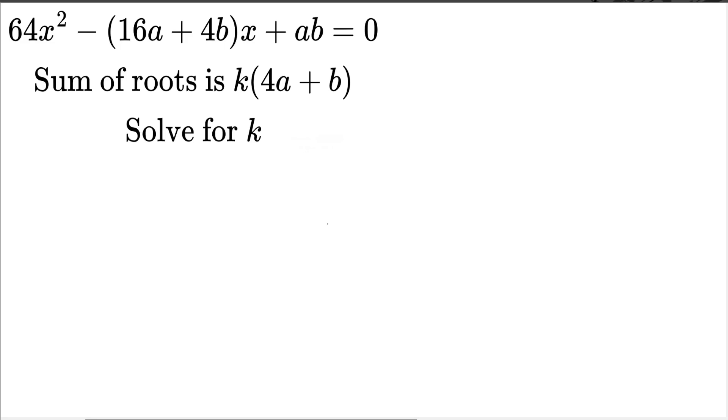In this video I'm going to be covering this practice PSAT problem from College Board. We're given 64x² - (16a + 4b)x + ab = 0. The sum of the roots is k(4a + b), and we are solving for k. Pause the video if you want to attempt this on your own.